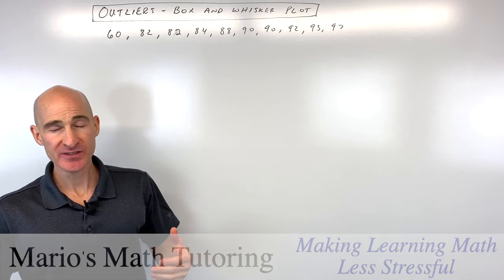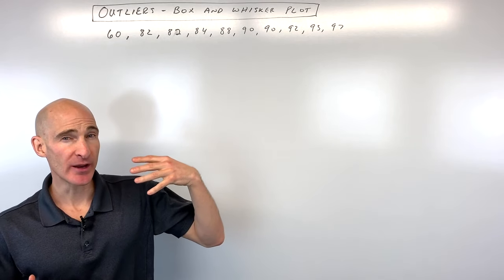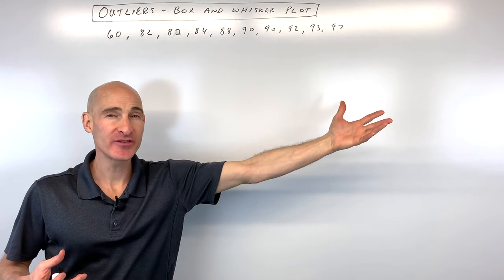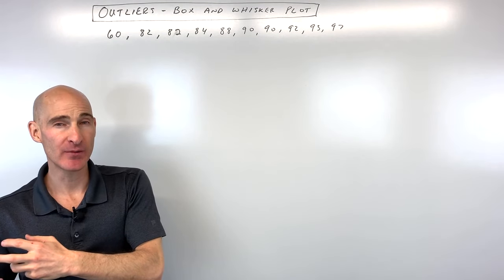Well, in a general sense, what an outlier is, it's a data point that's either a lot larger than all the other data points or a lot smaller than all the other data points.